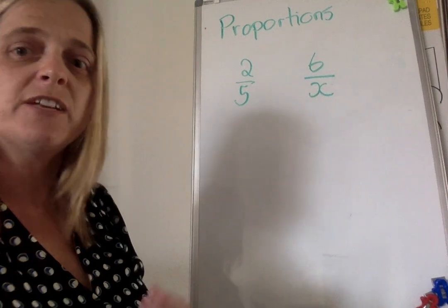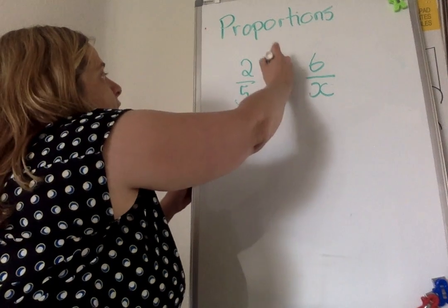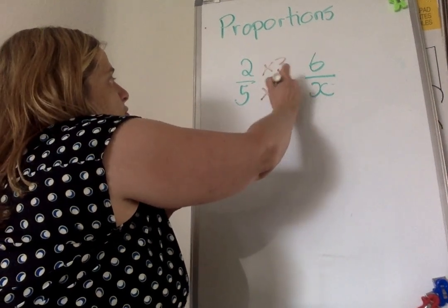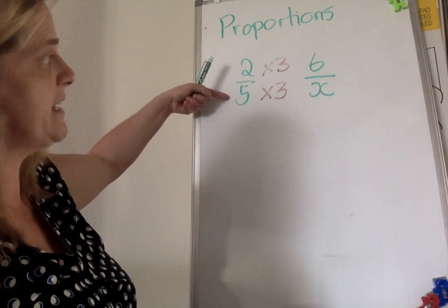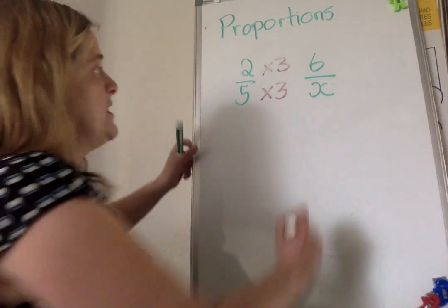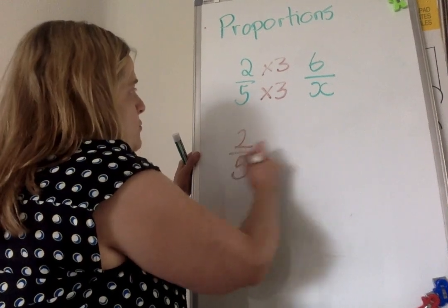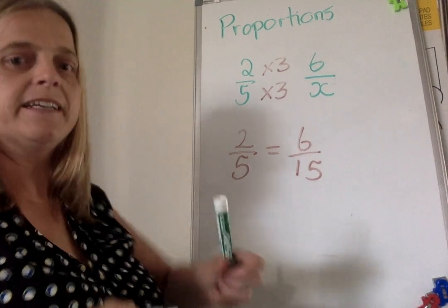What did you multiply 2 by? Remember, we're all about balancing that equation. You multiply it by 3. What you do to one side of the equation, you must do to the other side. Therefore, 3 times 5 is 15, so the proportion is 2 over 5 is the same as 6 over 15.